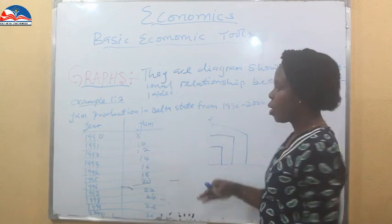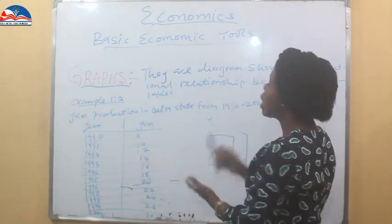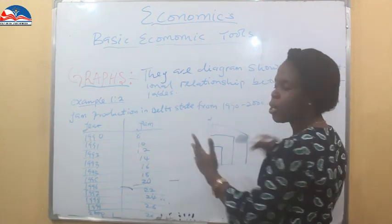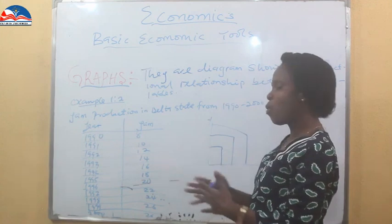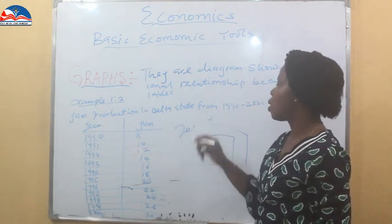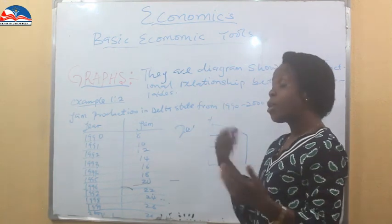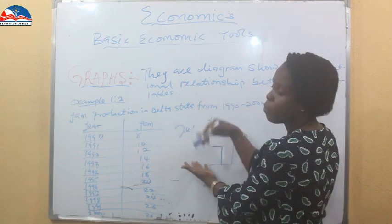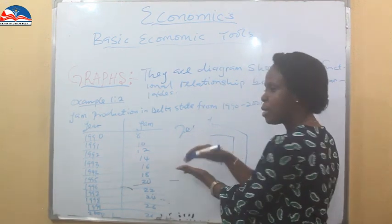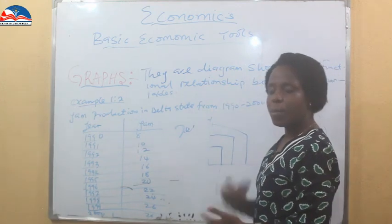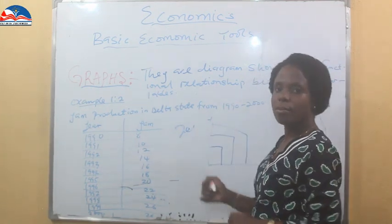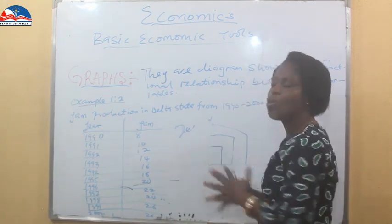Here is an example: 'Yarn Production in Delta State from 1990 to 2000.' We're going to plot the graph for these ten years and compare two coefficients, and look at the features of a graph. I am going to use two centimeters to two units — though depending on what scale you want to use, you can use five centimeters to five units. Depending on the unit you choose in your graph and what you want to plot.